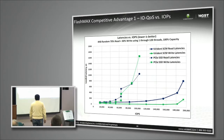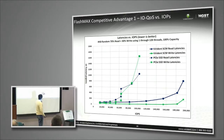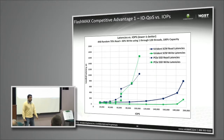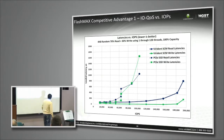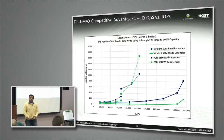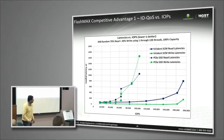Here comes the latency chart. Look at the gap — FlashMax is here, and the competitors are here. A big gap. The latencies are in the range of microseconds, with 180K IOPs. Look at these graphs — amazing latencies, which are very good for database applications, high-frequency trading applications, and more.